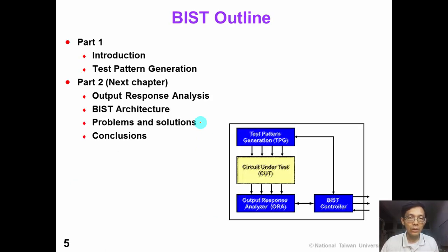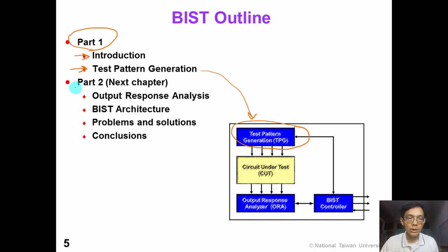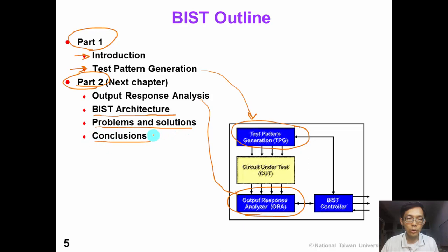Here is our chapter outline. There are two parts in this BIST lecture. In part one, we will first do an introduction of BIST, and then we will introduce the test pattern generator. In part two, which is in the next chapter, we will introduce the output response analyzer and some basic BIST architecture. Then we will discuss problems and solutions, and then conclude the BIST chapter.